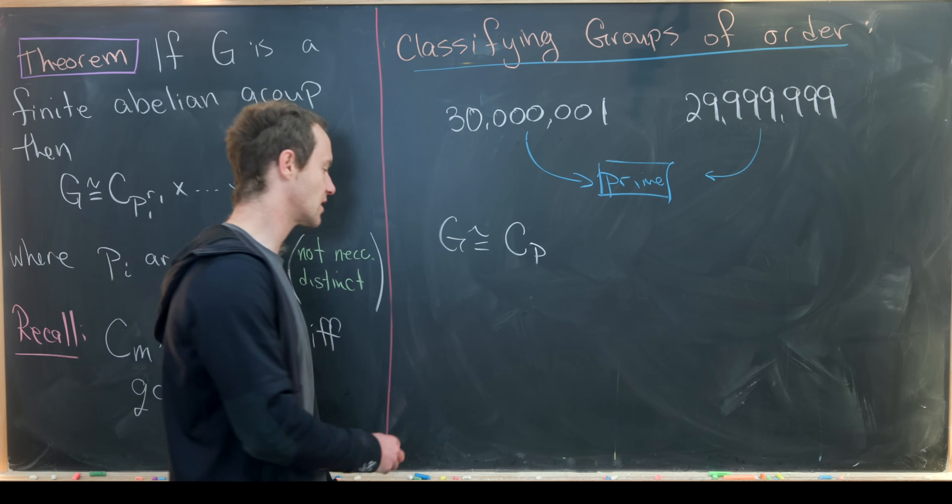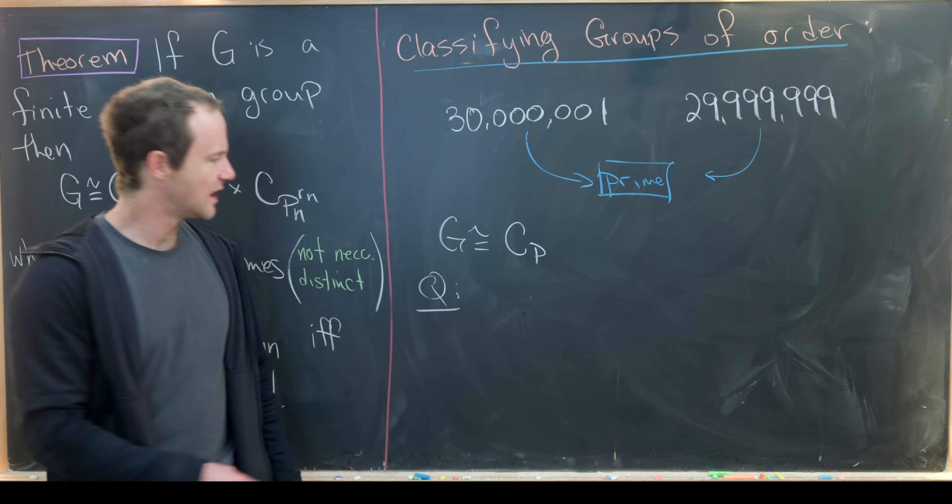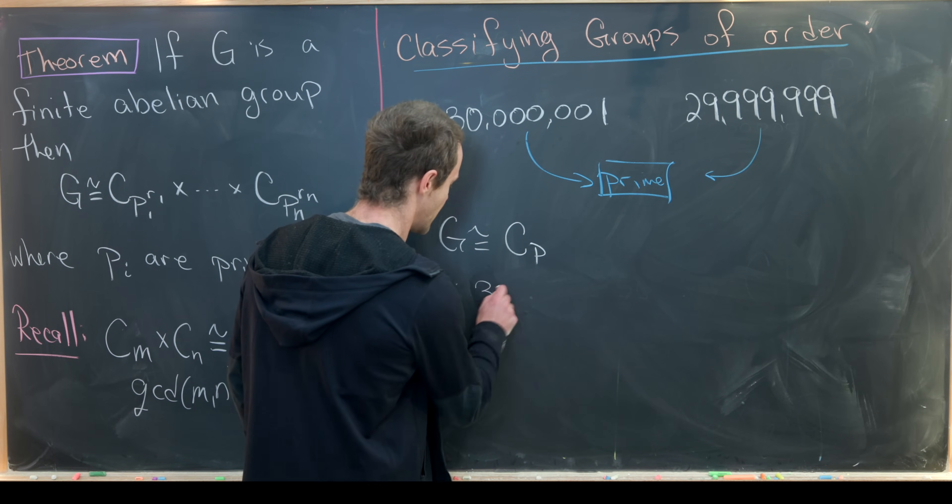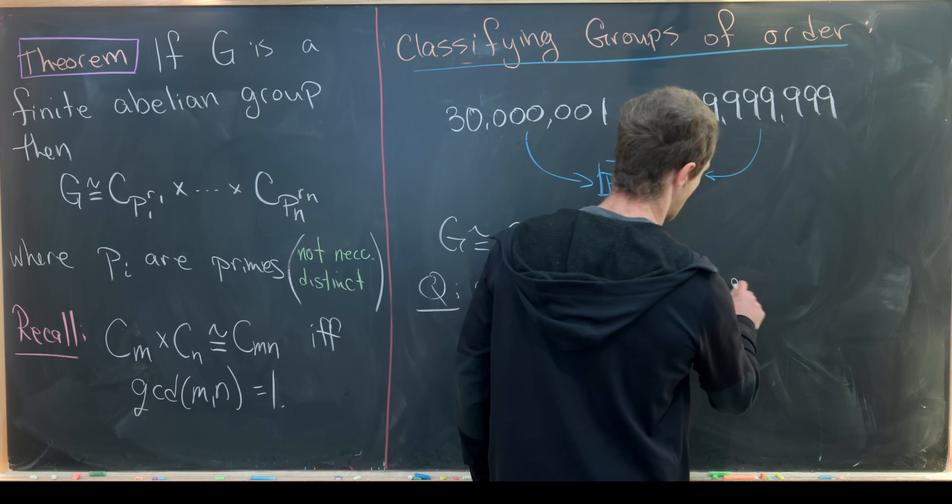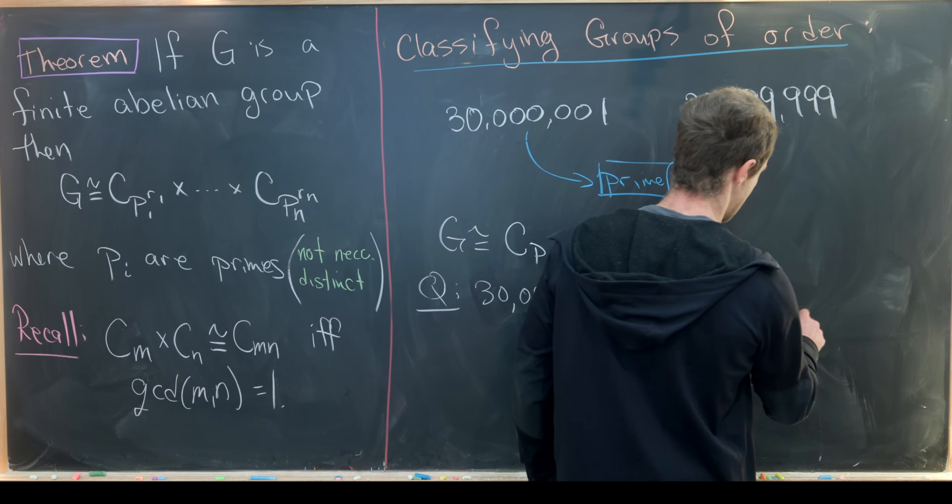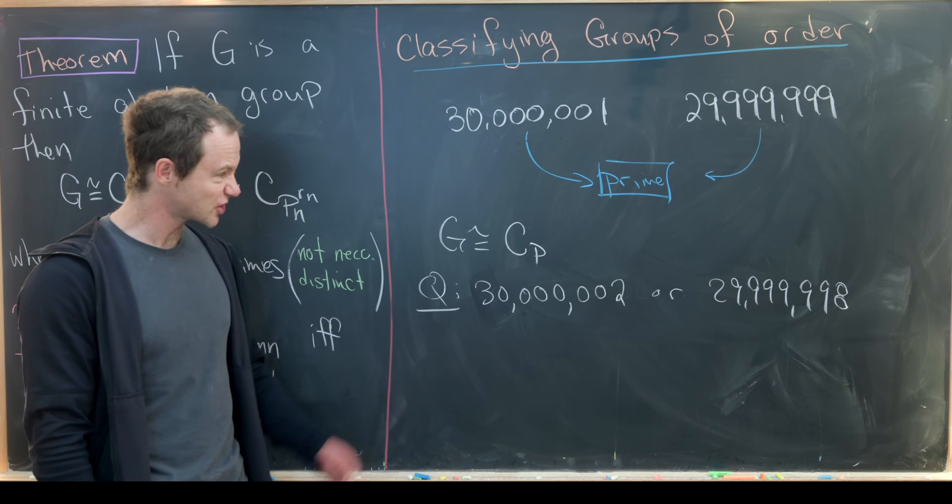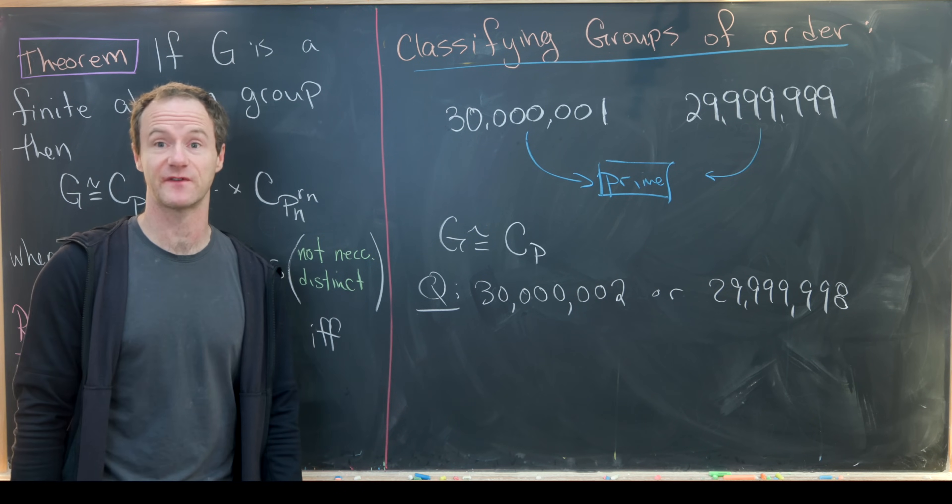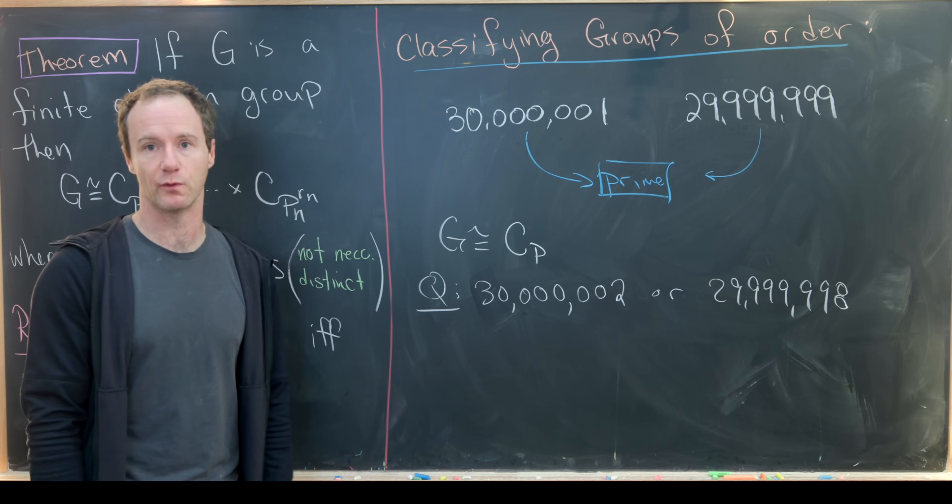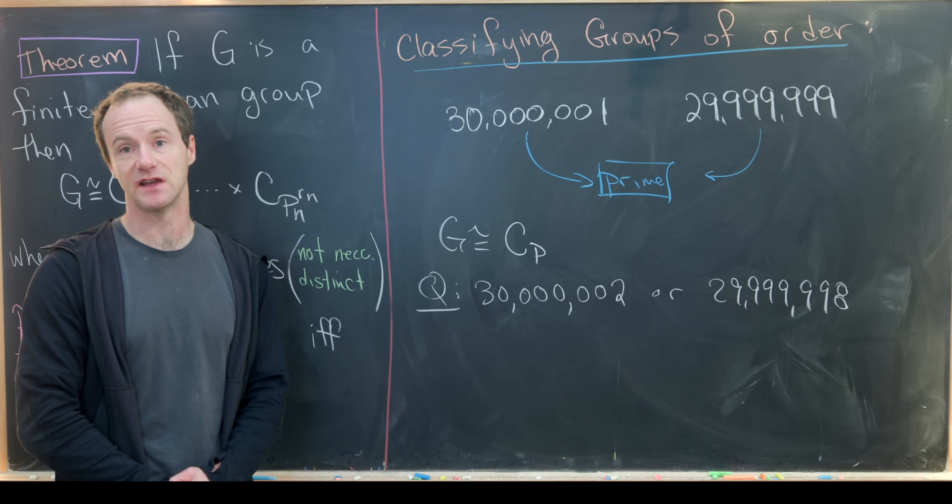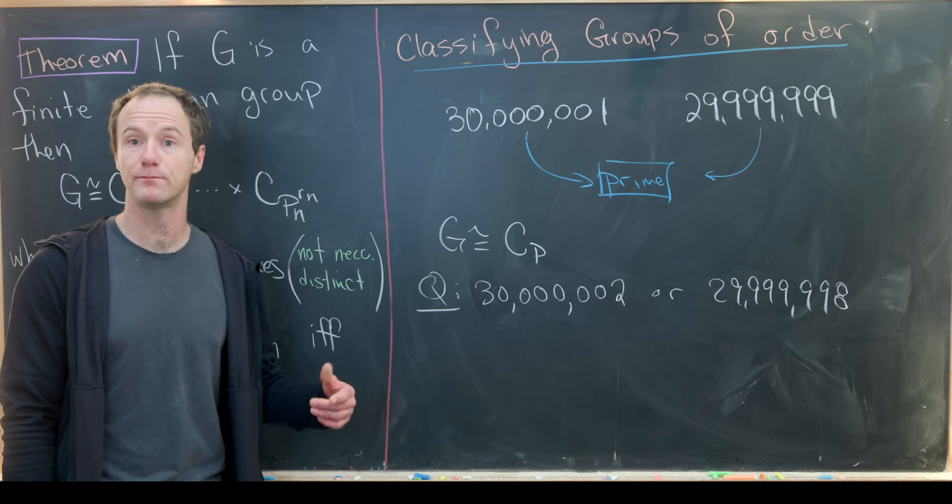I'll finish our discussion here, but I want to leave you a couple of questions to think about. What about groups of order 30 million and two or order 29,990,998? I played around with one of these and it's actually quite easy to classify all of the groups of one of these orders, perhaps both, but I only played around with one. So maybe you look at the prime factorization of these numbers and think about what types of groups you could build with this order and post it in the comments.